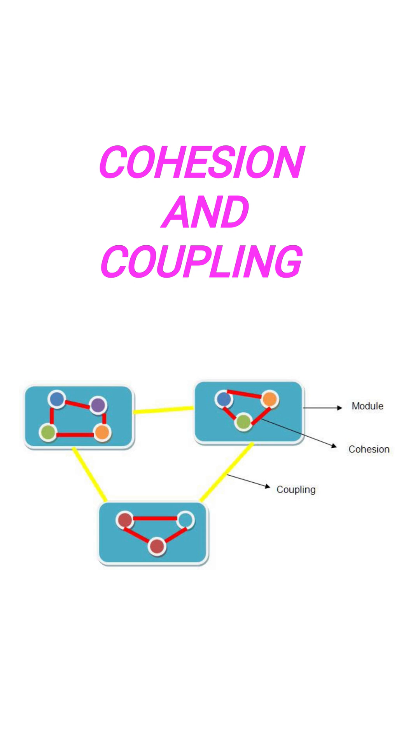Do you know what is cohesion and coupling in software engineering? These two are the main components in case of software designing. Now let's see.